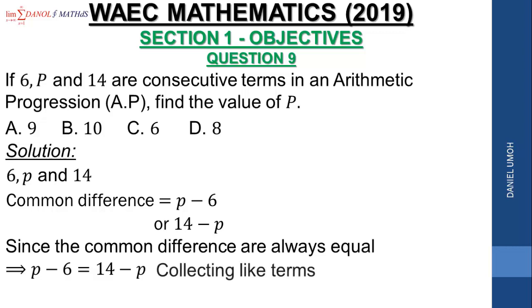We have P. The P in the right-hand side crosses over, it becomes plus P. That equals 14. The 6 in the left-hand side across the equality sign becomes plus 6.